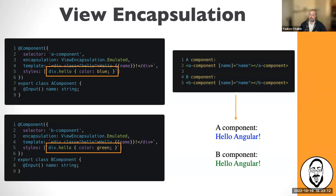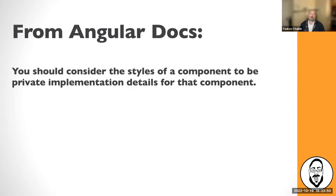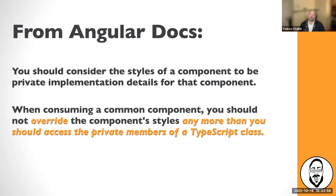What if I need to customize my component styles? I want a component as a reusable piece of functionality, but it's not just functionality — it's also a reusable UI piece and reusable style. If I wanted to customize it for a particular application of that component, how do I do that? If you look at Angular docs, it says you should consider the styles of a component to be private implementation details, and you should not override them any more than you would access private members of a TypeScript class.